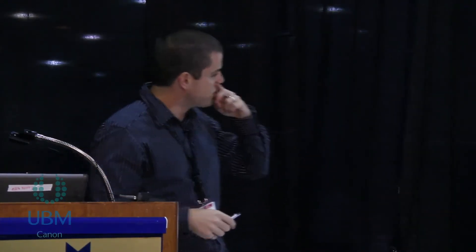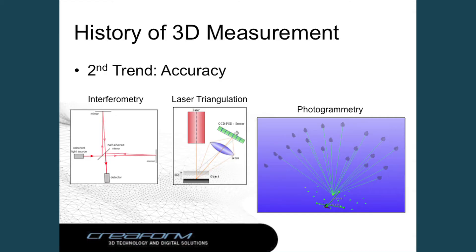If you look at the right end of the screen, you have all those camera positions that will record the same points you can see at the bottom of the screen. With software that bundles all those camera positions and computes the position of those points. Photogrammetry-based 3D measurement is still one of the most accurate and reliable technologies in 3D measurement today — really considered the best for creating a 3D point coordinate.